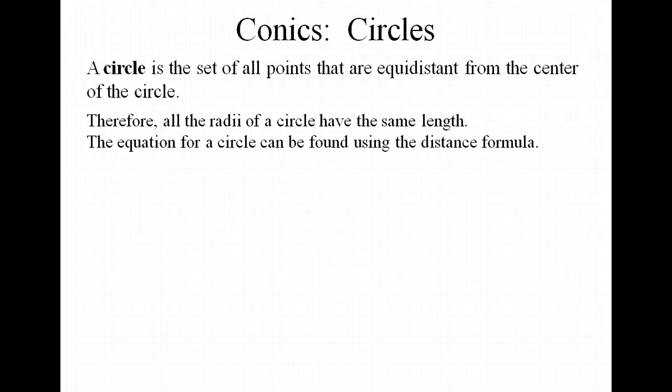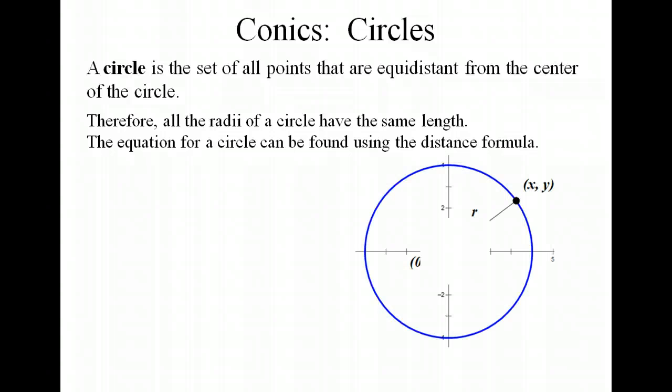Since all of the radii have the same length, the equation for a circle can be found by using the distance formula, because we're looking for any points that are the same distance away from that center point. Let's start with a circle that has a center at (0, 0).